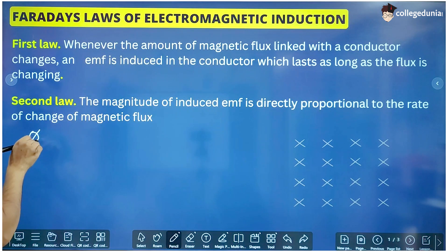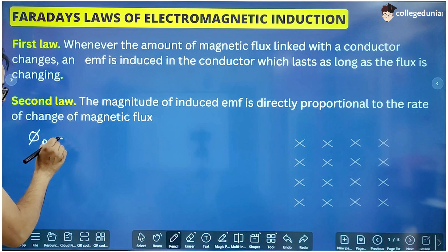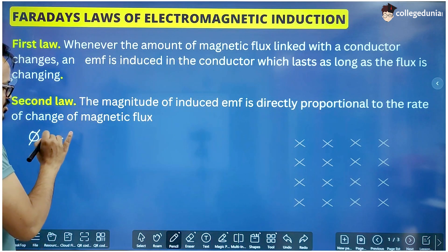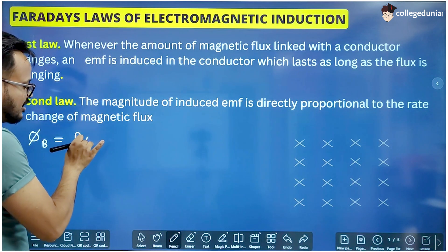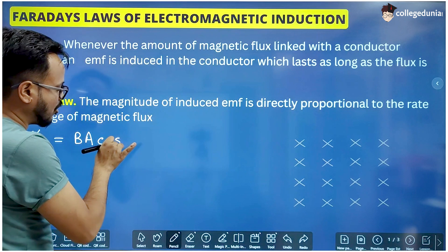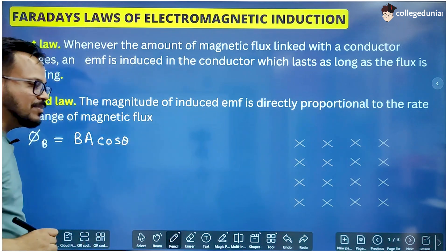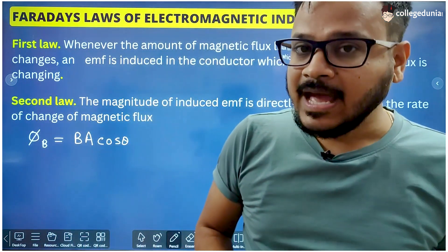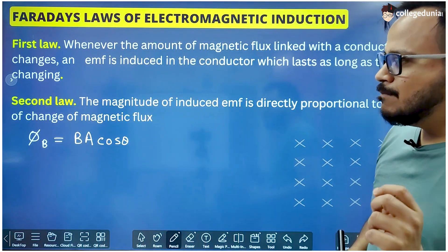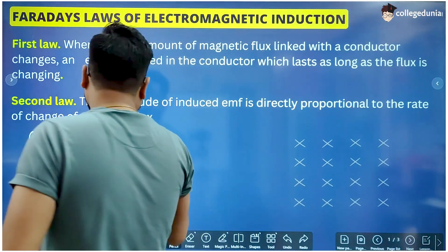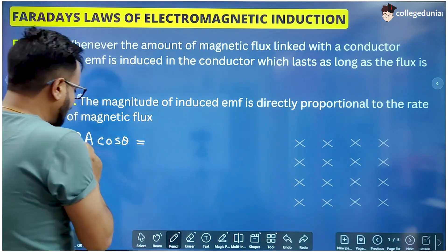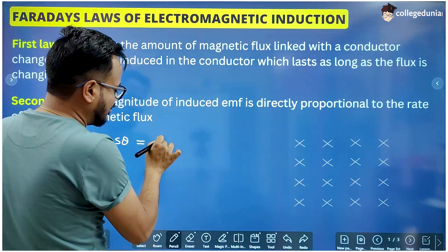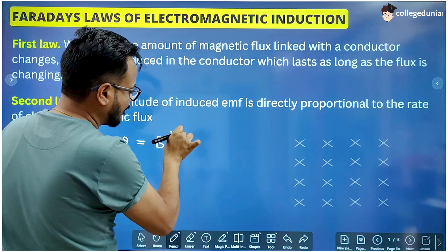Magnetic flux is represented by the symbol phi-B, where B is a subscript. The formula for magnetic flux is B·A·cosθ, where B is the magnitude of the magnetic field, A is the magnitude of area, and theta is the angle between the magnetic field and the area vector. Since B and A are both vector quantities, we can write this as B dot A.